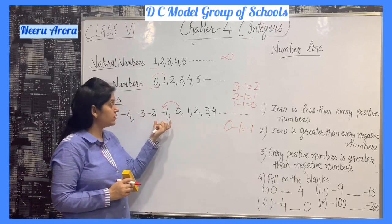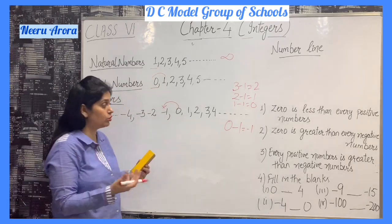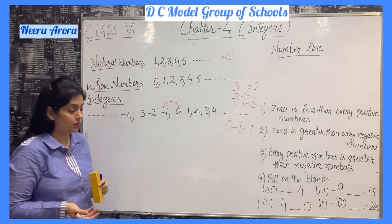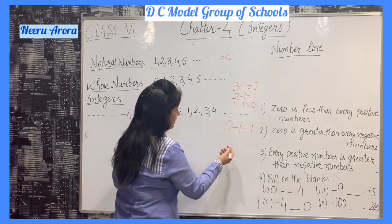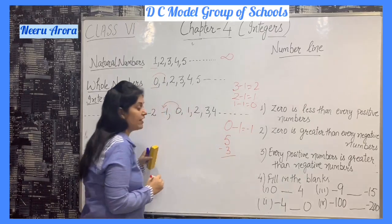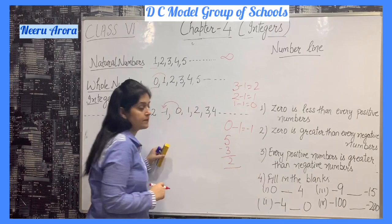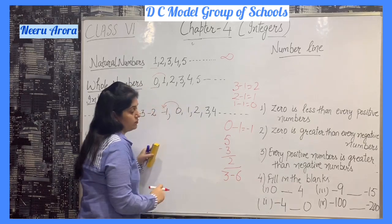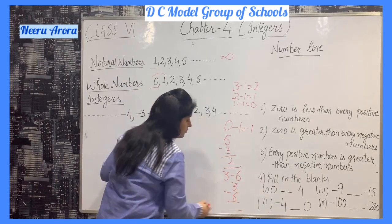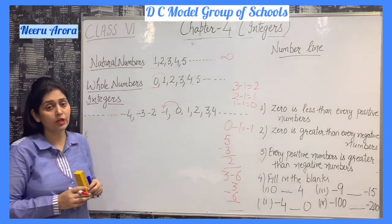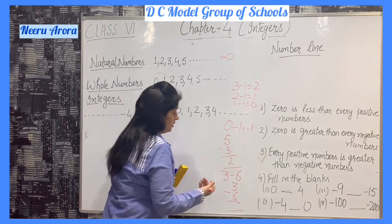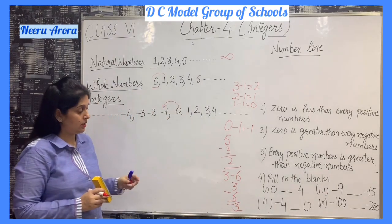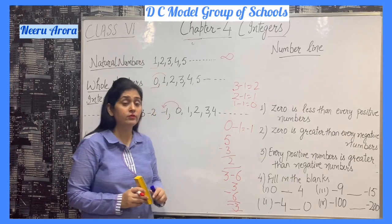Here there is an introduction of negative numbers. If you want to find the predecessor of 0, here is an introduction of minus 1. For example, if we subtract a smaller number from a bigger number — suppose 5 minus 3, we get 2, which is a whole number. But if we subtract a bigger number from a smaller number, the result is not a whole number — it comes out as minus 3. Again, there is an introduction of negative numbers.